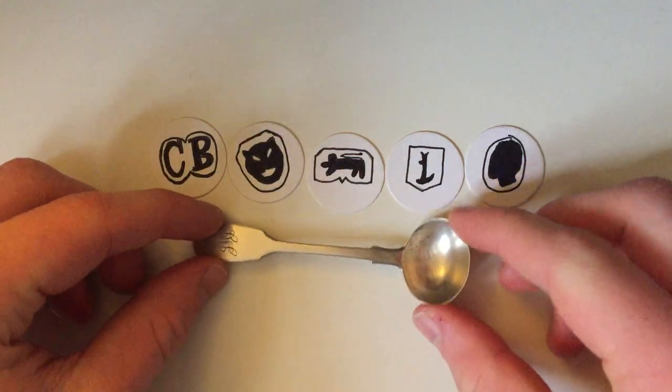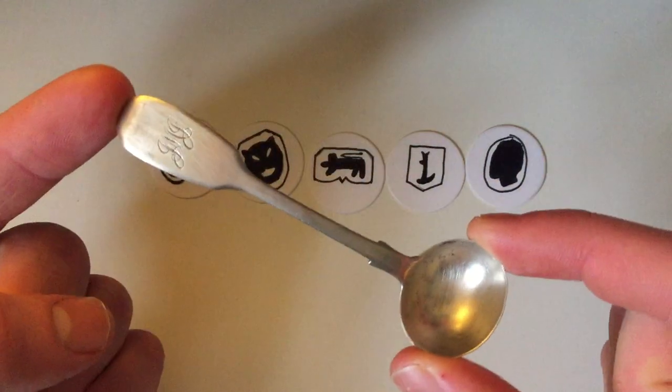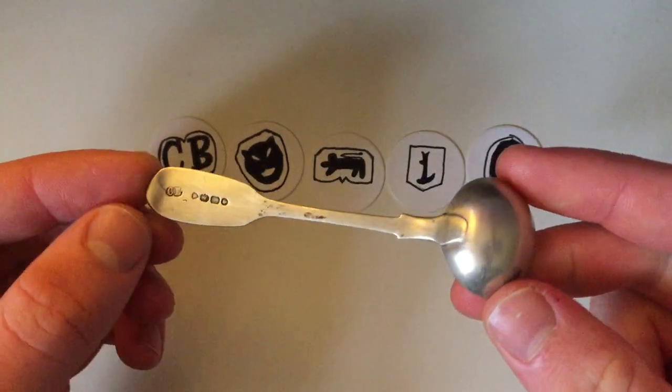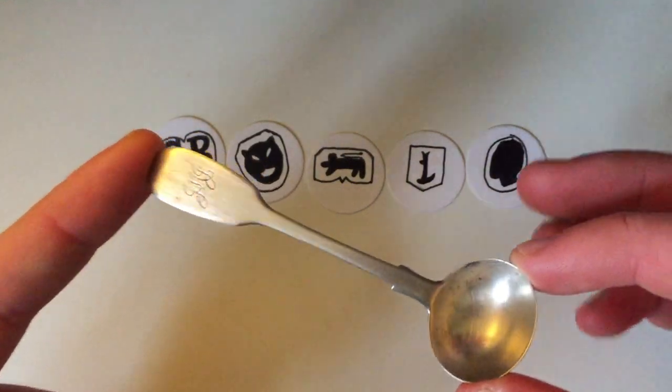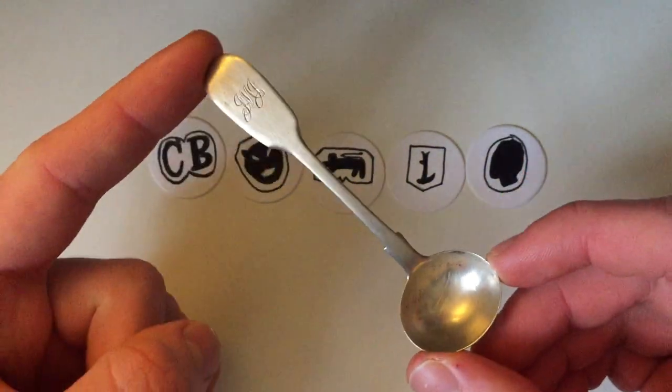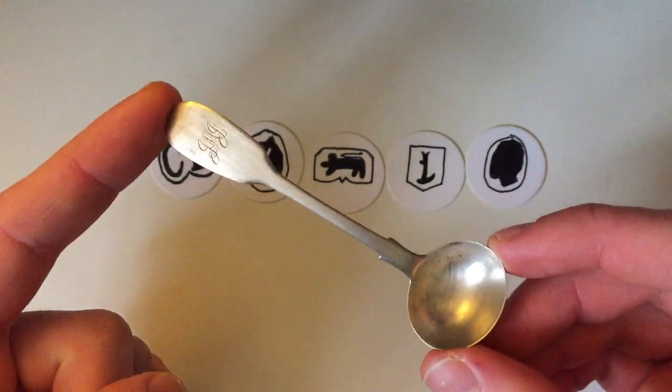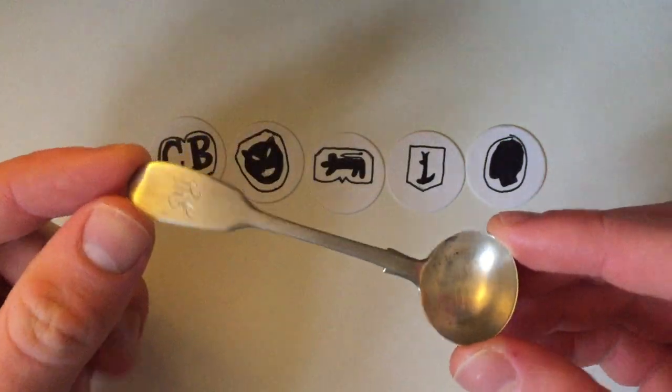Hello everyone, CoinCollector here and today we're going to be taking a look at a Victorian silver mustard spoon. As I'm sure many of you are aware, one of my other hobbies is that I collect, buy and sell antique silver. And today we're going to be taking a look at a nice item. So as I said, this is a Victorian and it's a silver mustard spoon.